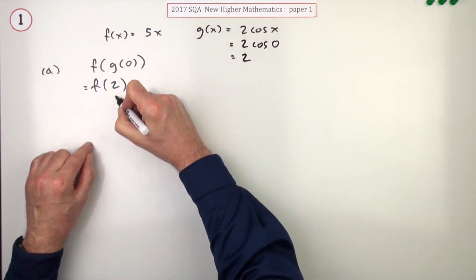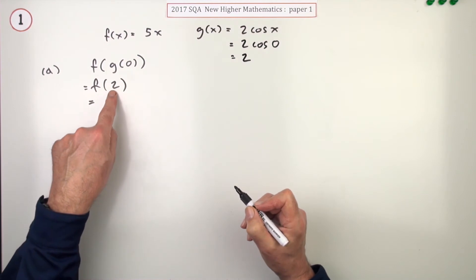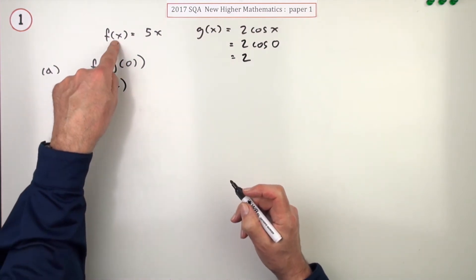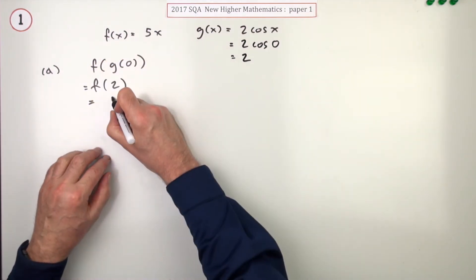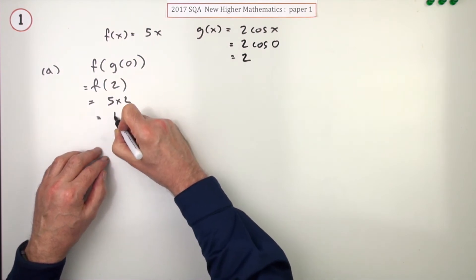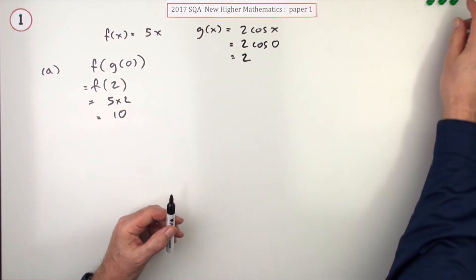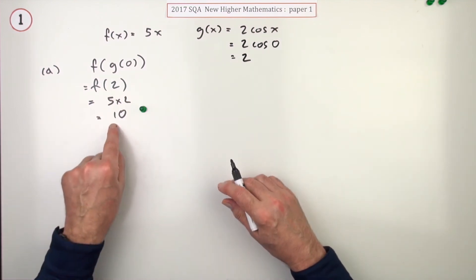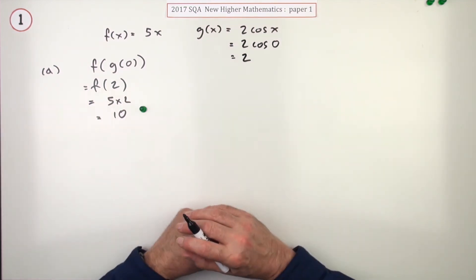So that means f is now going to act on the answer two, and what does f do to anything it gets hold of? It does five times it, so it'll do five times two which gives you ten. And there's the first mark. And yes, if you just wrote ten you'd get that mark.